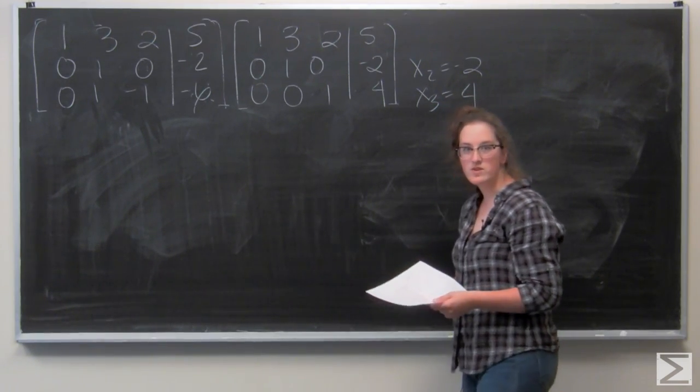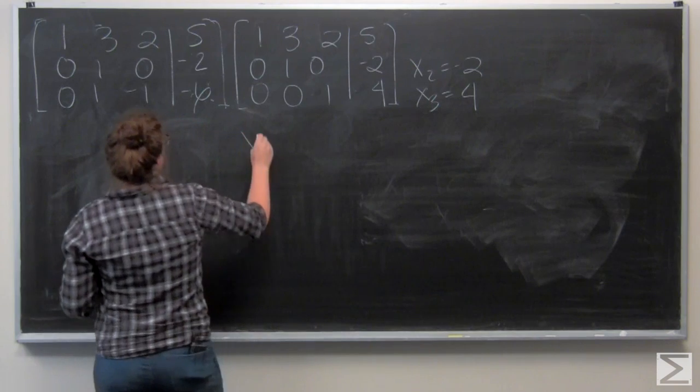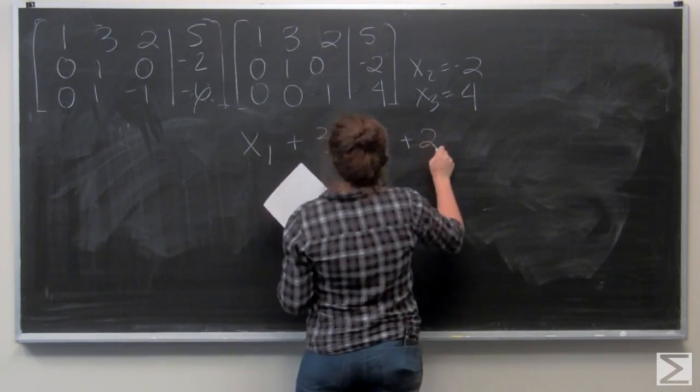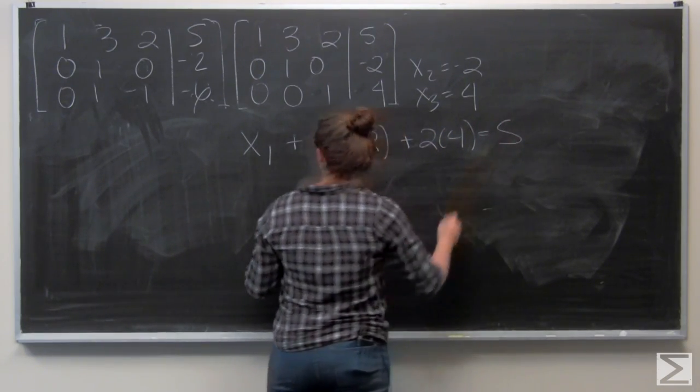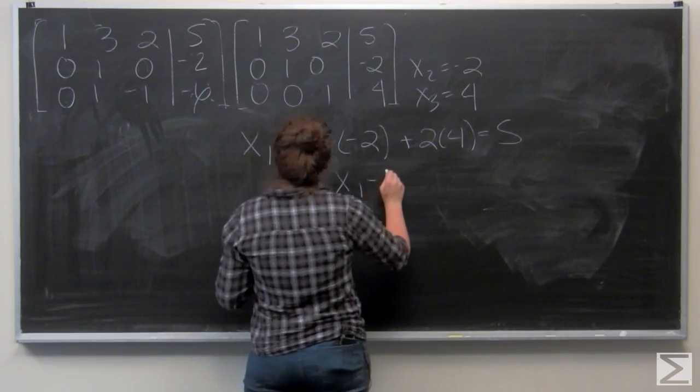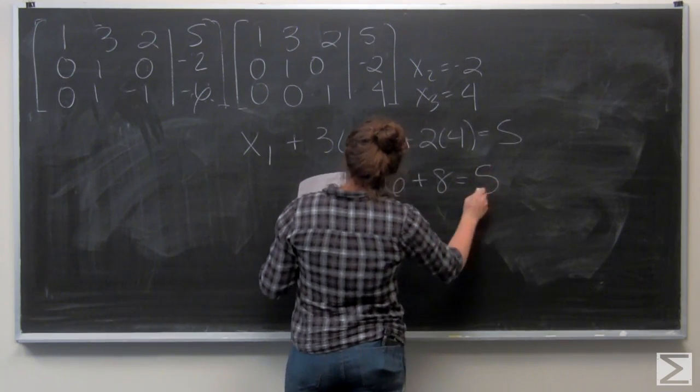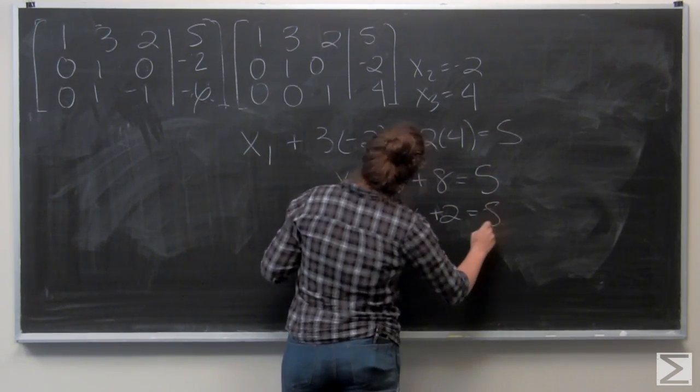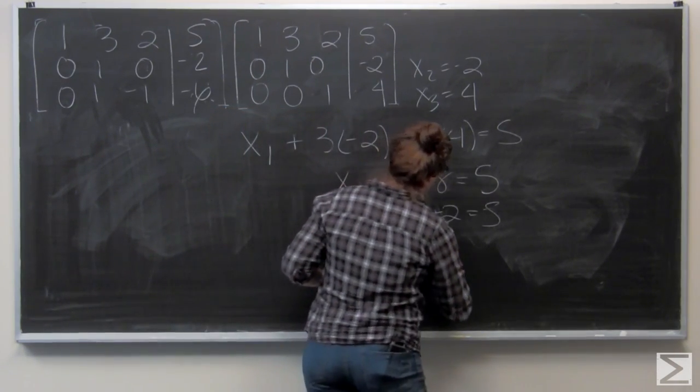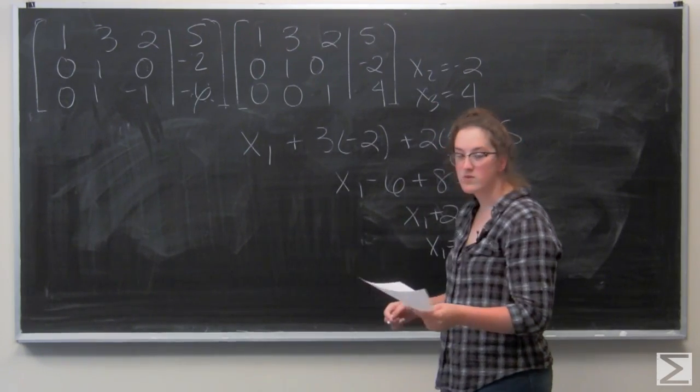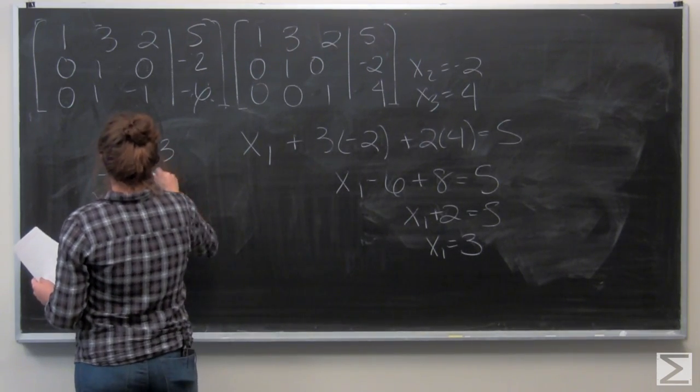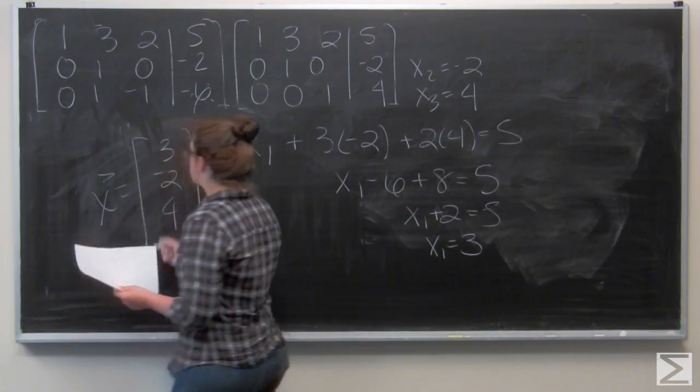And now I want to back substitute into the top equation. So I have x1 minus 6 plus 8 equals 5. x1 plus 2 equals 5. x1 equals 3. So I want to write that solution as a vector is going to be the vector 3, negative 2, 4.